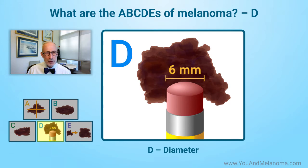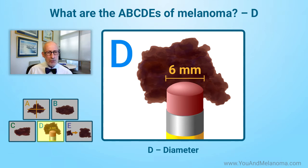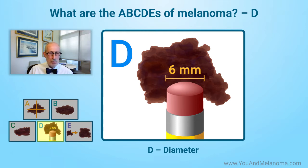D is for diameter. A pencil eraser size is six millimeters, and more than six millimeters is when you begin to think about having a mole looked at. But it's not just the size — I personally have plenty of moles bigger than six millimeters, but they're all regular, pale, and not irregular in border or asymmetric. When at least two of those first four characteristics combine, you get concerned.